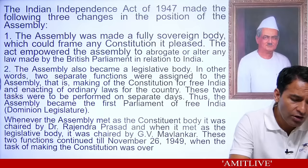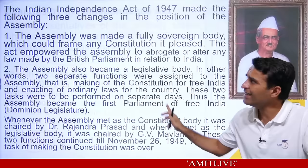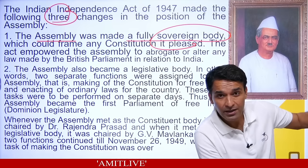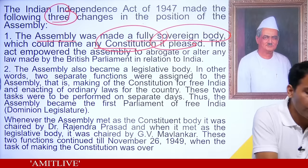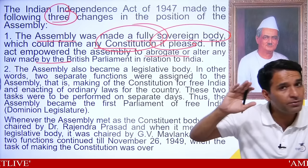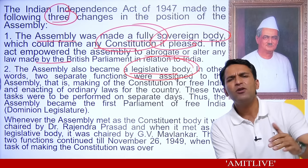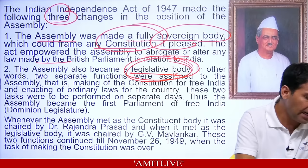Second, the Constituent Assembly also became a legislative body. Since constitution-making takes time, in those 2-3 years if laws needed to be made, the same Constituent Assembly would do it. These two tasks — making the constitution and making ordinary laws — were performed on separate days. The assembly became the first parliament of free India. Also, it was bifurcated: people from the Pakistan area formed Pakistan's Constituent Assembly and people from India's area formed India's Constituent Assembly.